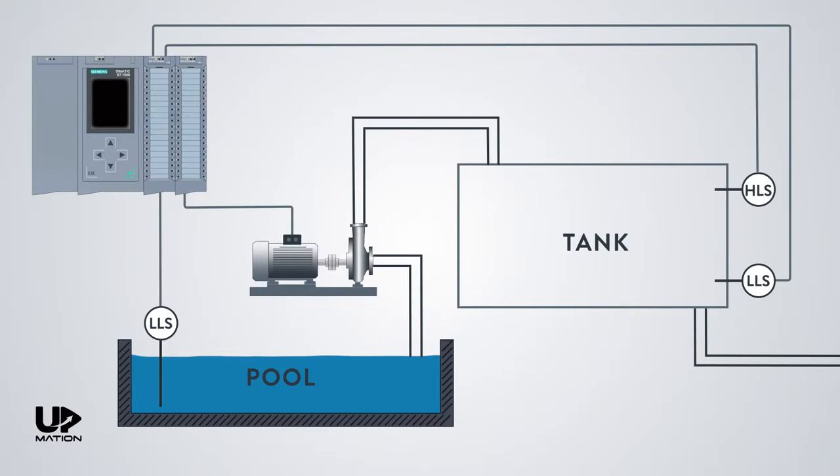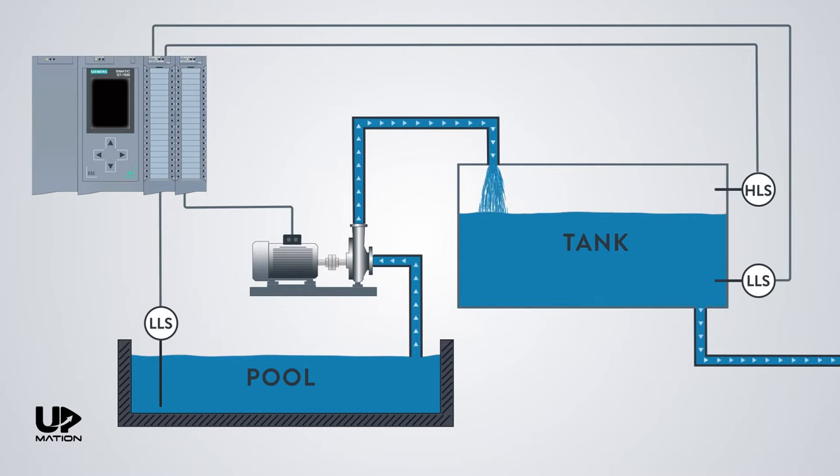In this process, the pump should transfer the water from the pool to the tank automatically. For being automatic, there should be a low-level switch on the bottom and a high-level switch on top of the tank, as well as a low-level switch in the pool.